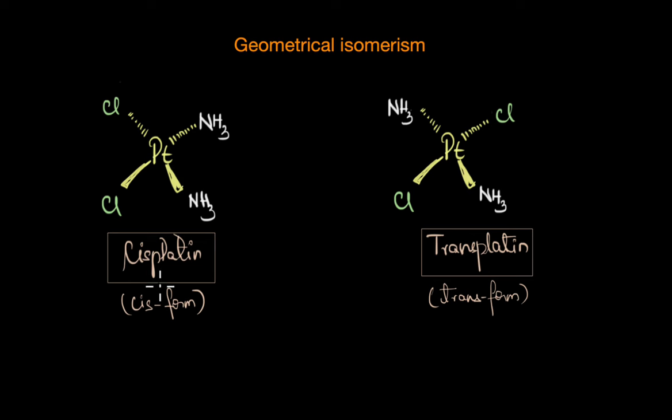In the cis form of arrangement we have the ammonia molecules and the chloride ions adjacent to each other, whereas in the trans form we have these ligands opposite to each other.